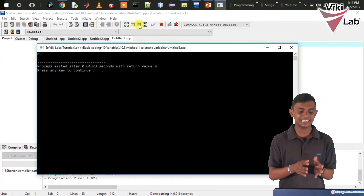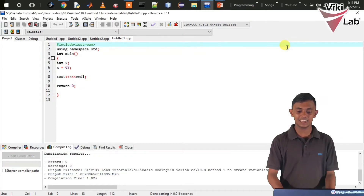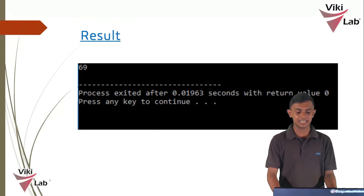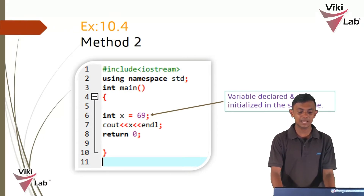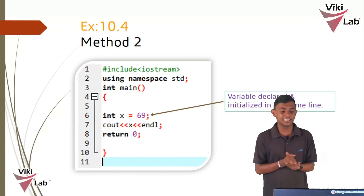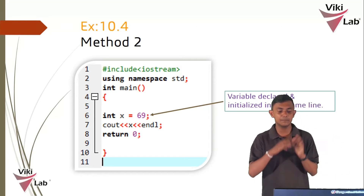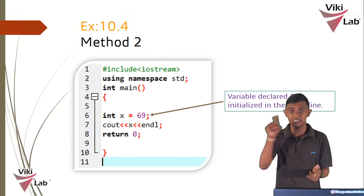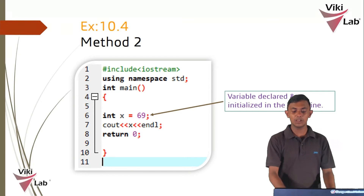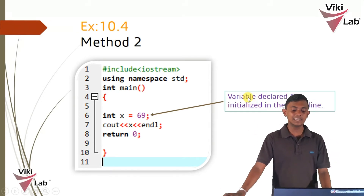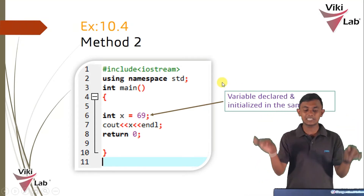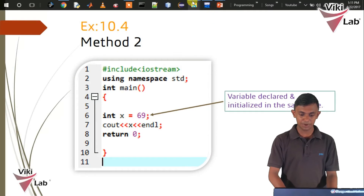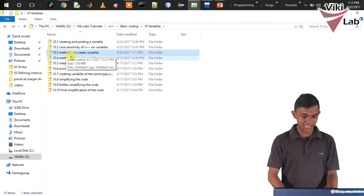I will compile and run. I will print this screen and show you how to do it. I will initialize and declare, and run this code in the int main. I will open it and declare and initialize.